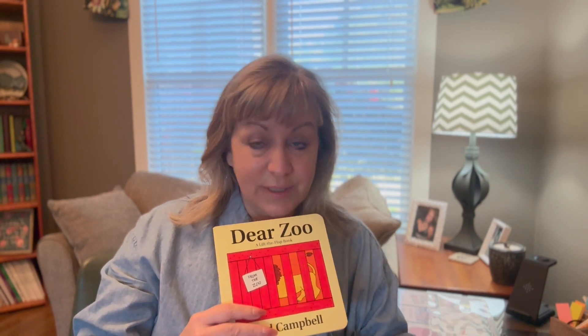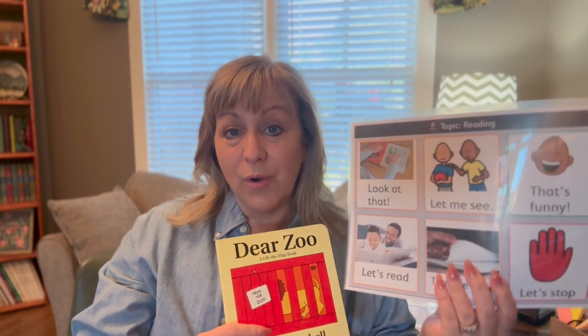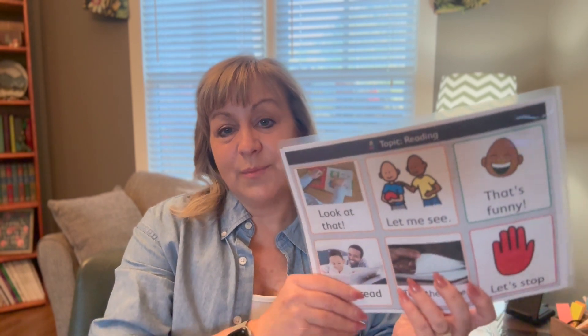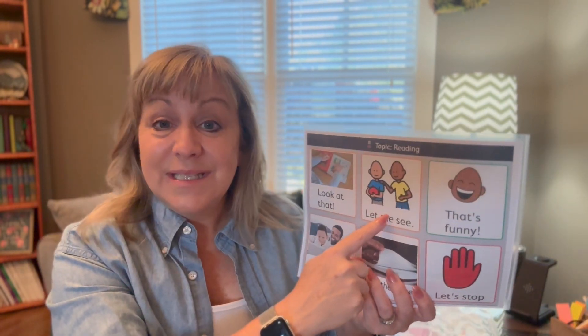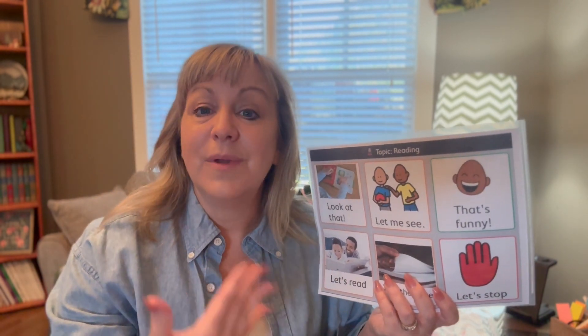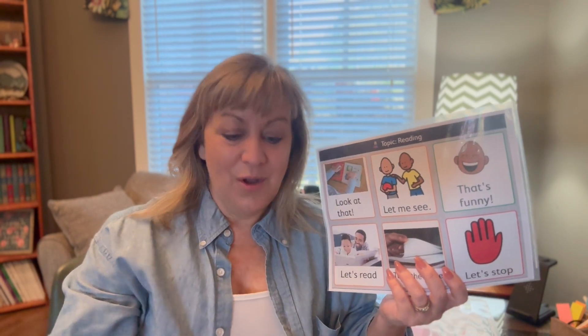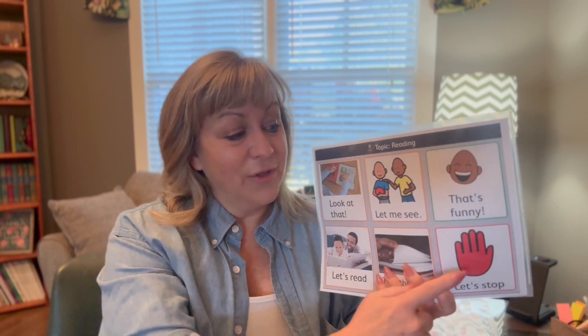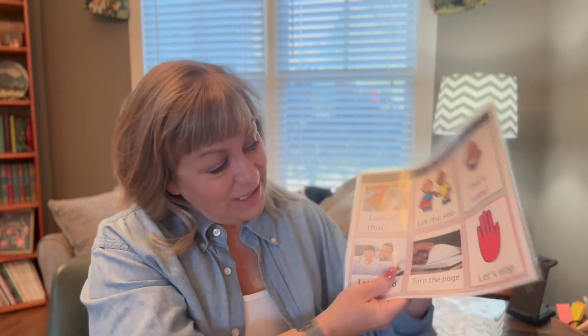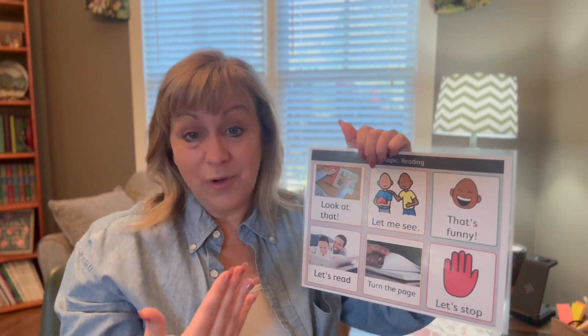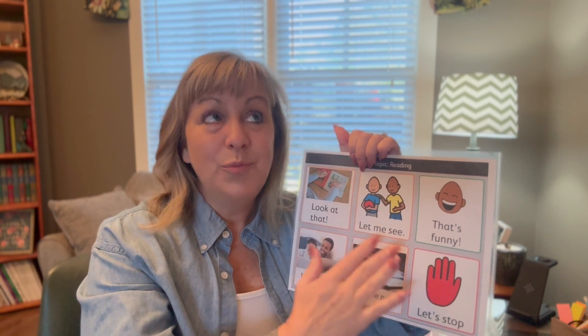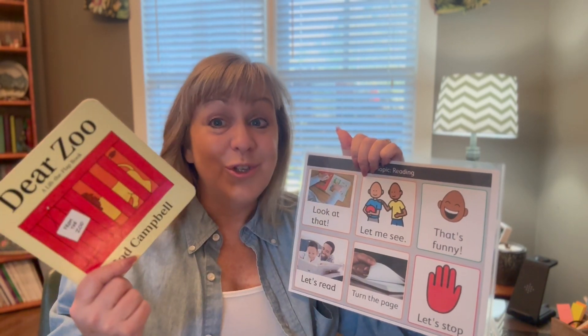I created a very simple preschool communication board that goes along with reading a book. It has very simple messages like 'look at that,' 'let me see,' and 'that's funny' — things that you or the student may say while reading. We want to teach the student to use multiple functions of communication: to control the situation by saying 'let's stop,' to make requests like 'let's read,' to comment with things like 'that's funny,' and to participate by saying 'let's turn a page.' Six simple comments, requests, and control messages students can practice during an activity you're doing anyway.